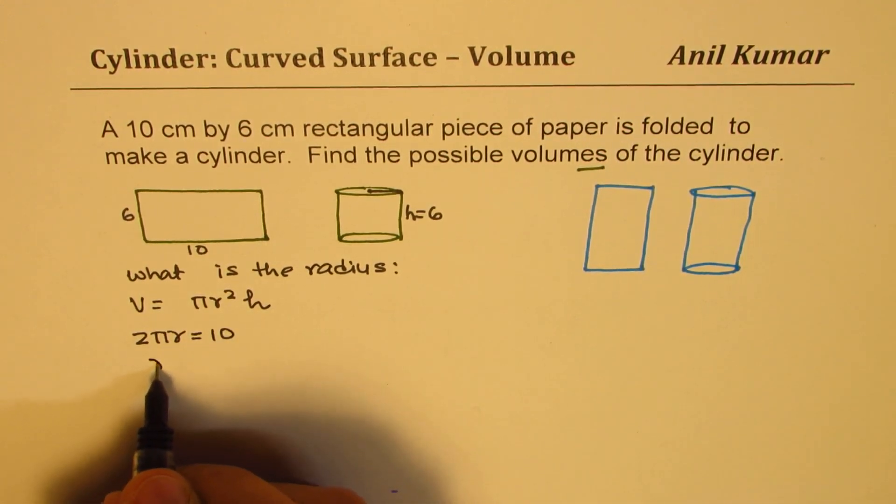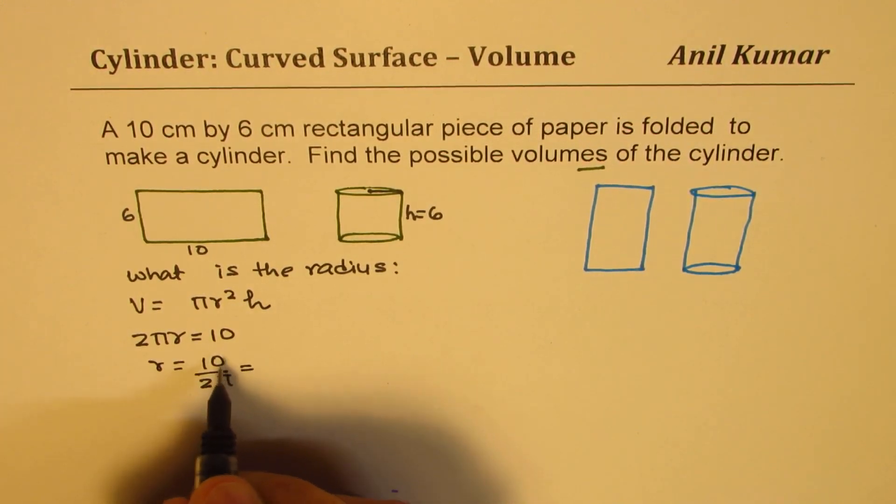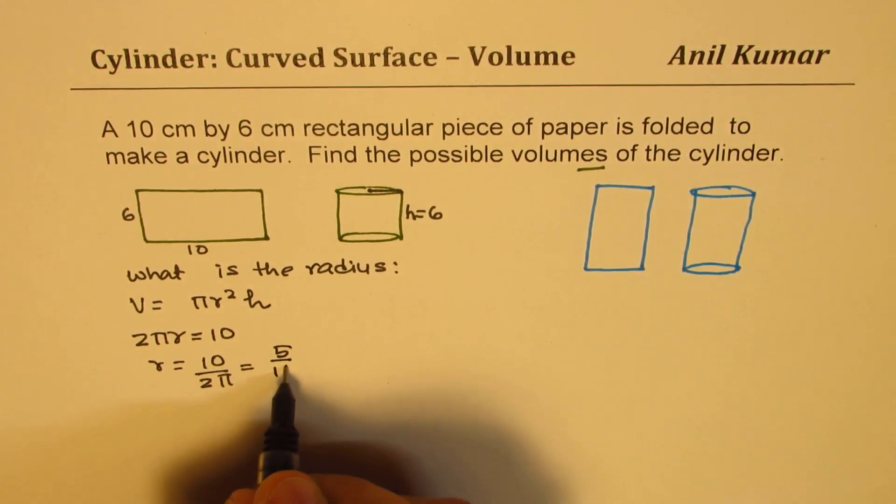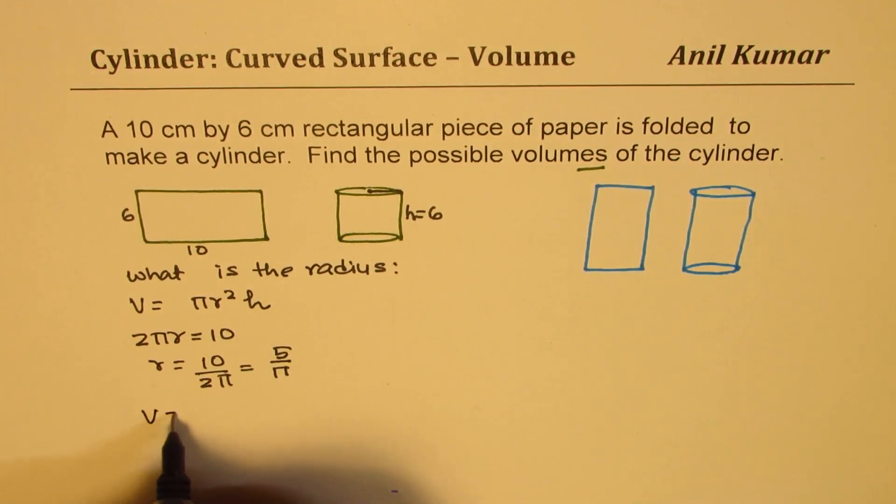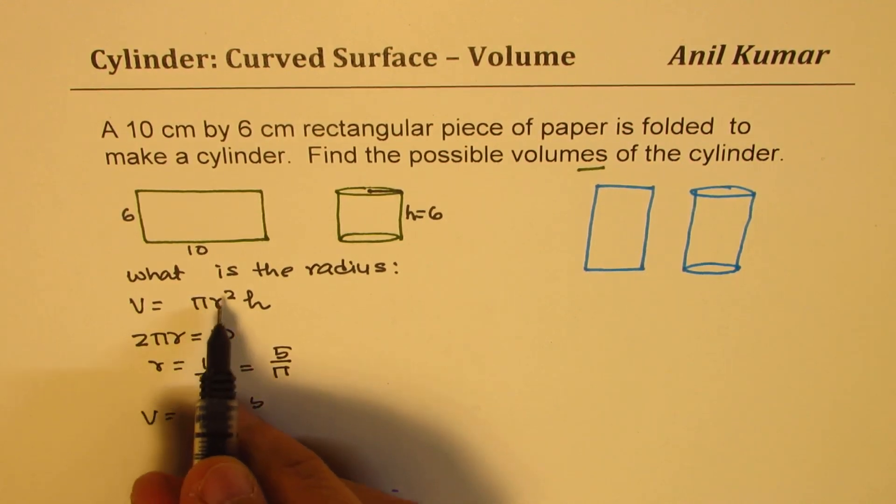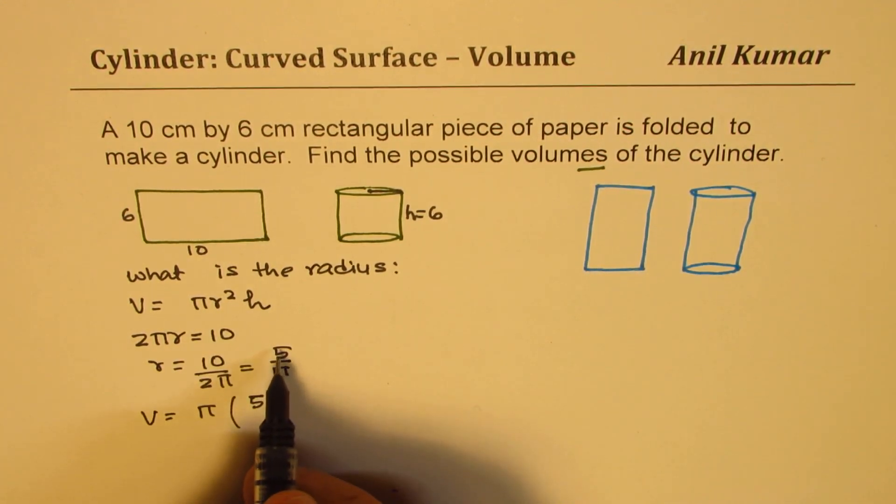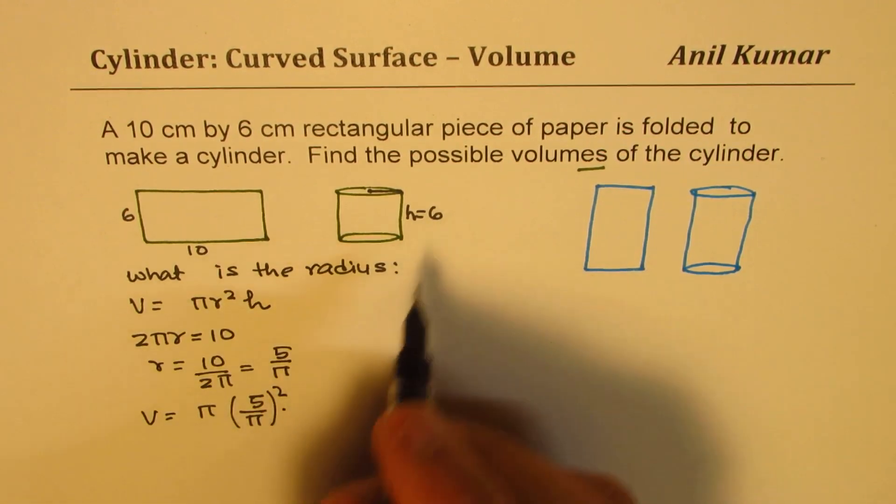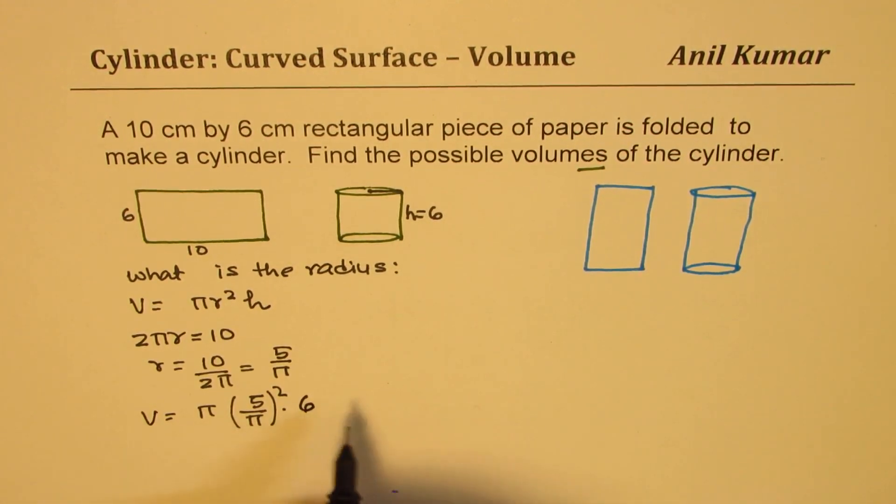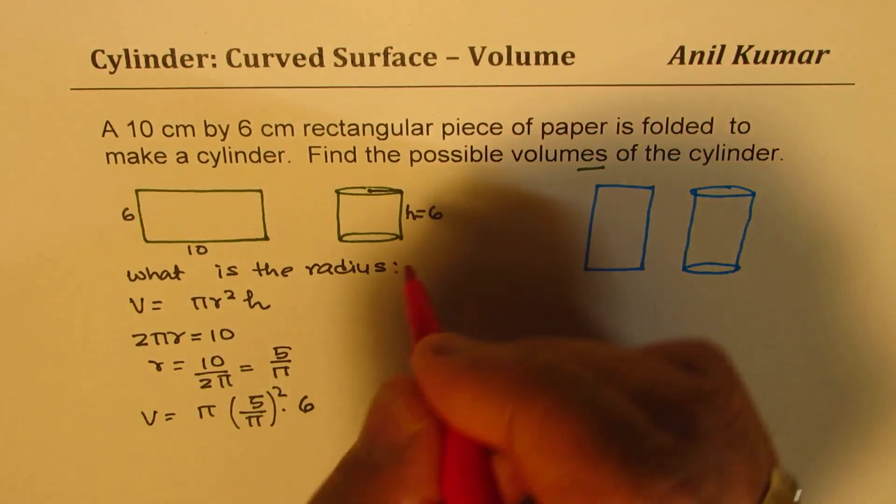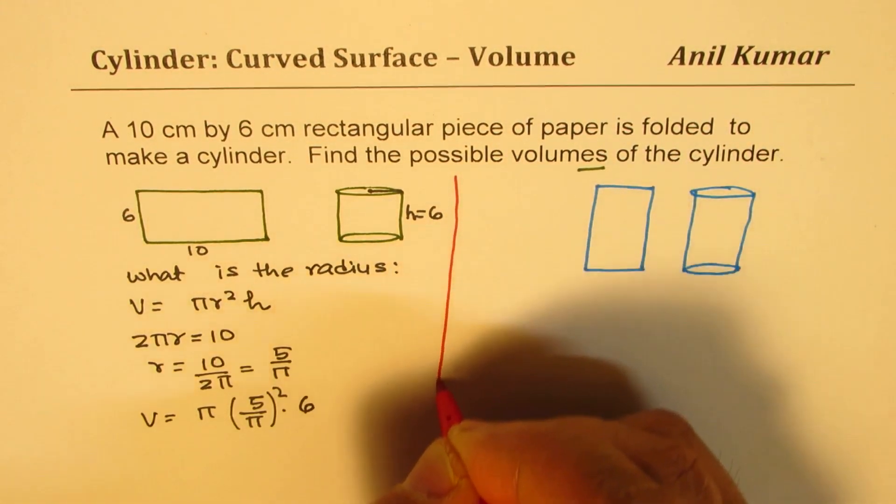So from here, r equals to 10 divided by 2 pi, or we can write 5 divided by pi. So we get the volume here as pi times r squared, so 5 divided by pi whole square times height of 6. And now we can use calculator and find this value. Perfect. So that is one way to do it. So I hope you got the method.